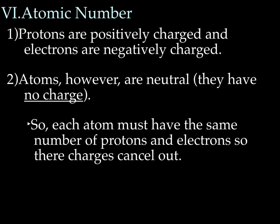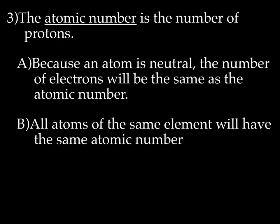Here's the deal: protons are positively charged, electrons are negatively charged. Atoms, however, are neutral — they have no charge. For an atom to be neutral, it has to have the same number of protons as electrons so that the charges cancel out. So if you know how many protons an atom has, you know how many electrons it has. We have this thing called the atomic number. The definition of the atomic number — and this is hugely important — is the number of protons. Because an atom is neutral, the number of electrons will also equal the atomic number, but the actual definition is the number of protons.